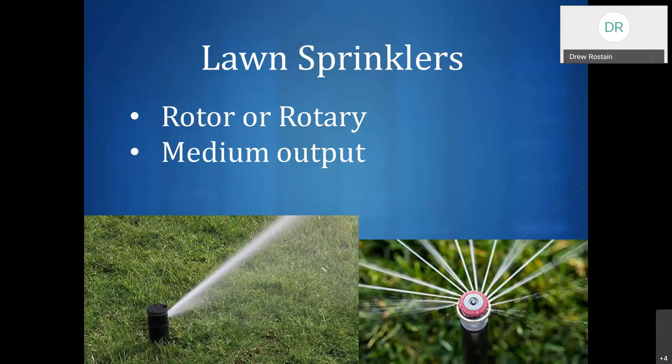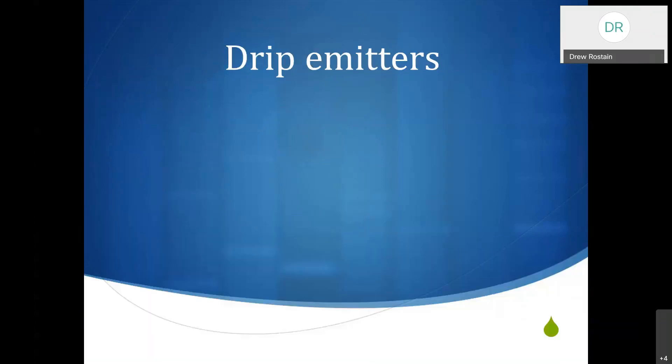If you look at rotors — those you'll often see in an HOA or park — they'll be on for a very long time because they're covering a very large area. You may have these if you have a larger lawn. It's important to know because you don't want to run them like your fixed sprays.